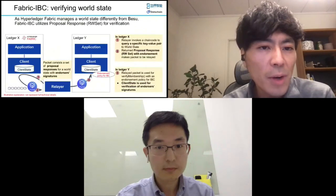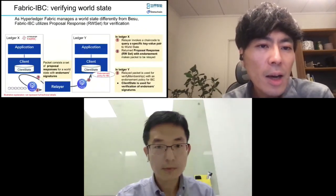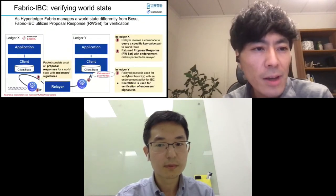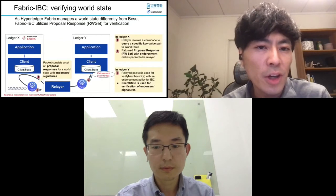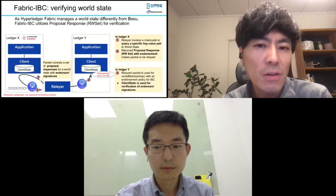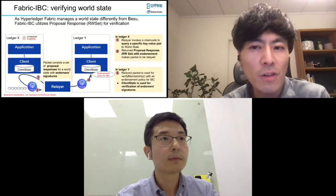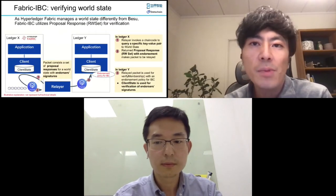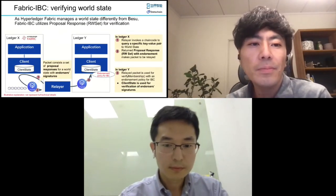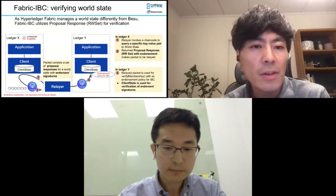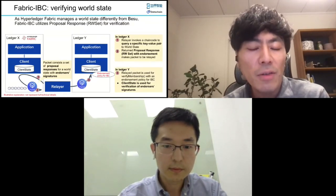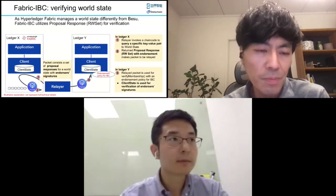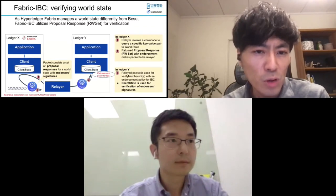Let's move on to Fabric IBC. Hyperledger Fabric manages a validator state differently from Hyperledger Besu. Since Fabric does not provide inclusion proof for its tree structure, we need to come up with a different idea for validator state. Fabric IBC utilizes proposal responses or read-write sets for verification. The basic idea is that if you query a chaincode, you will get a read-write set for corresponding key-value pairs with an endorsement signature.